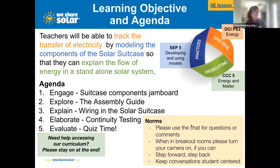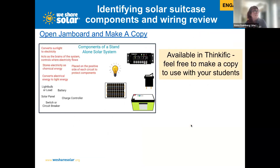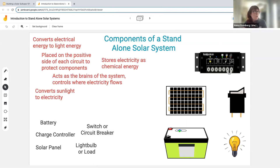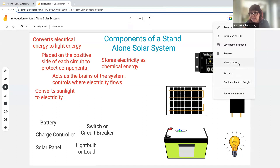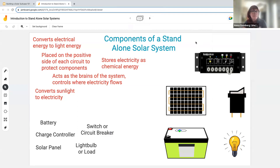We're going to move into our first activity — a Jamboard. I was going to put you two in a breakout room, but I think we'll just stay all together. Ali is about to copy a link to a Jamboard. When you open it, if you'd like to make a copy, click the dots on the right and select 'make a copy' — then you can edit it. It's also in our curriculum. I've got names of components, pictures of components, and definitions. Can you match any of them up?